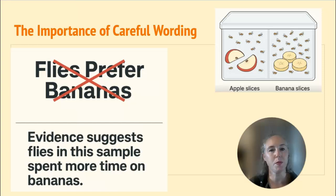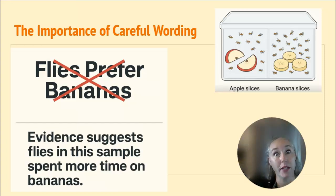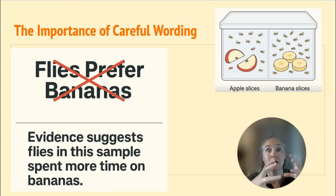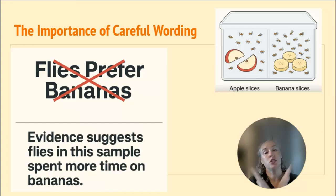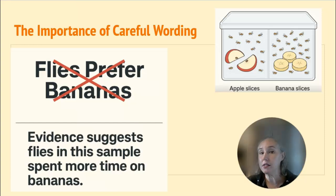Part of the practice is wording things carefully. Say at the end your data shows way more flies on the banana side than the apple side — we would reject the null hypothesis, but you can't then say it's official that fruit flies prefer bananas to apples, because you just tested a sample of all the fruit flies in the whole wide world. You can't use broad, sweeping conclusions. Something more accurate would be: the evidence or our data suggests that flies in this sample spent more time on bananas than on apples.